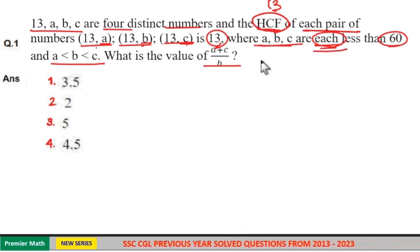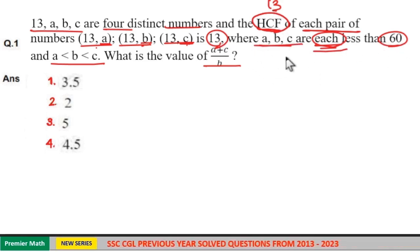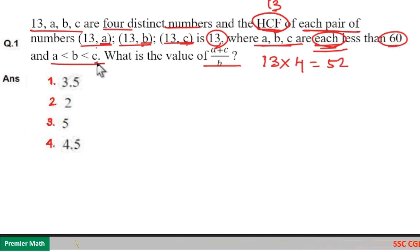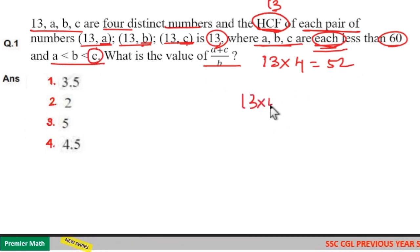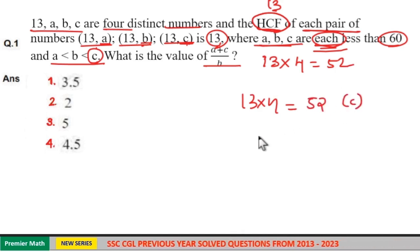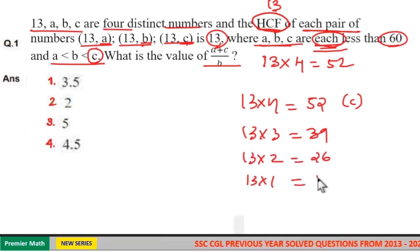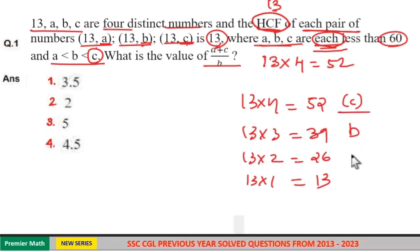A, B, C are each less than 60 means A less than 60, B less than 60, C less than 60. Now A, B, C multiples of 13 and less than 60. If you take multiples of 13: 13 into 4 is 52. Now 13 into 5 is 65 which is not less than 60. So this is the maximum, means C is the largest number, which means C is 52. So 13 into 4 is C which is 52, and 13 into 3 is 39, and 13 into 2 is 26, and 13 into 1 is 13.